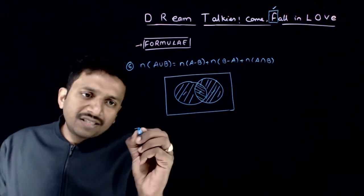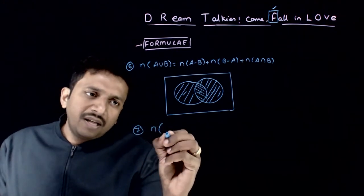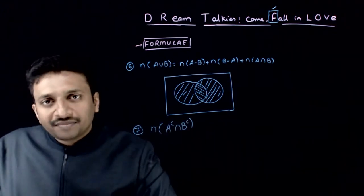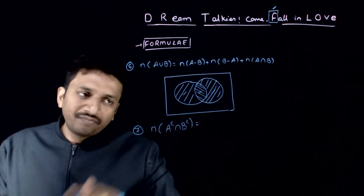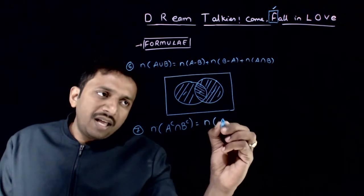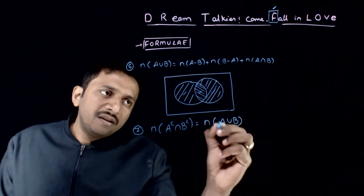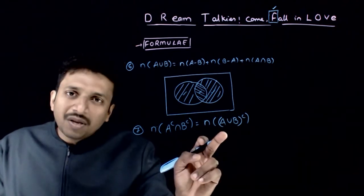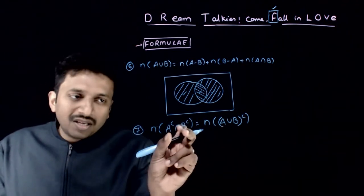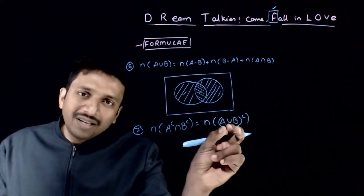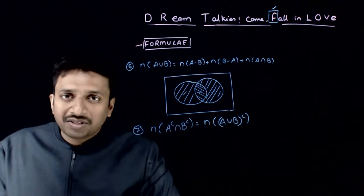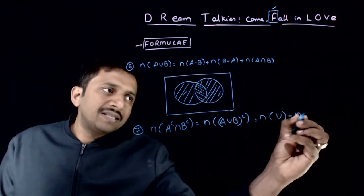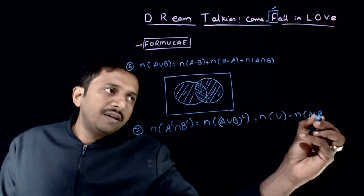The next formula is: N of A complement intersection B complement is nothing but N of A union B whole complement, because A complement intersection B complement equals A union B whole complement by De Morgan's law. That is equal to N of U minus N of A union B.